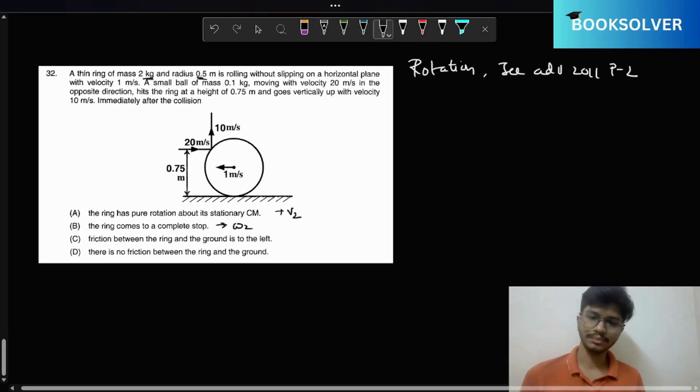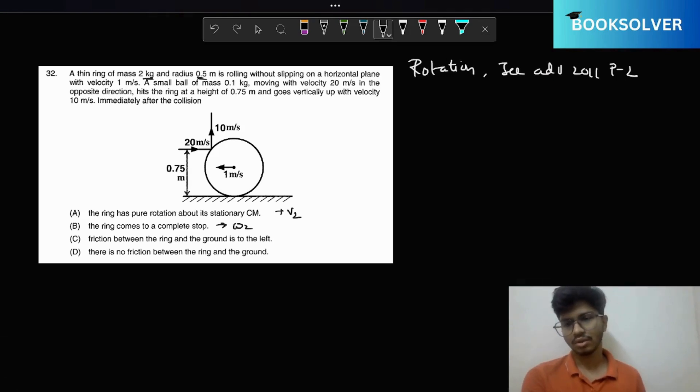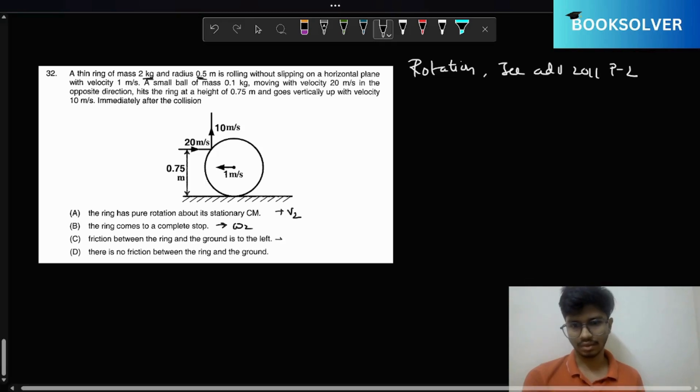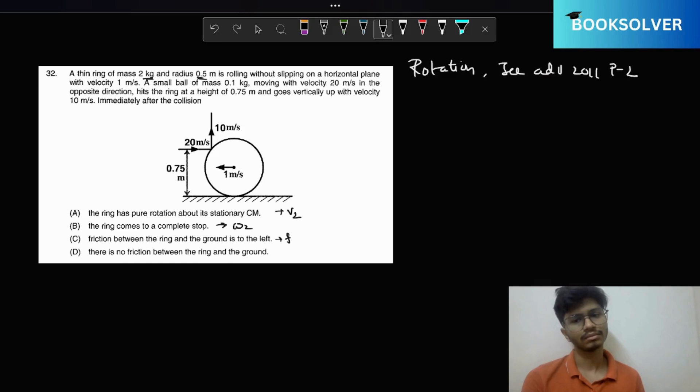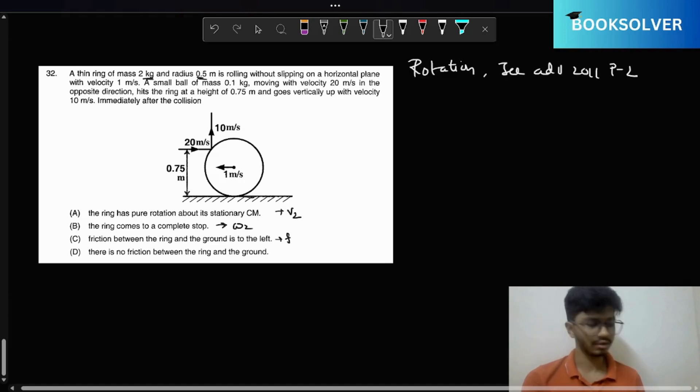The friction between the ring and the ground is to the left. We need to calculate the friction force. I think it will be towards the left, let's see. We don't have to calculate the friction force. There is no friction between the ring and the ground, that also we will see.